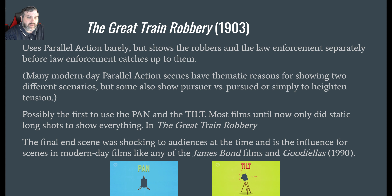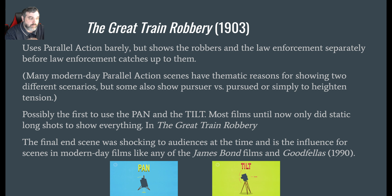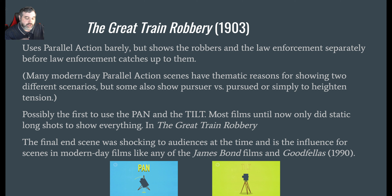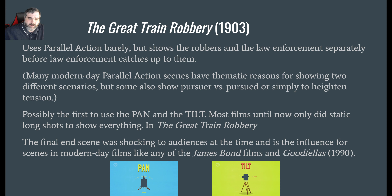There are two other big things about this film. First, it uses parallel action. Second, it's the first film to really use the pan and tilt of the camera. Up until this point, movies did static long shots. A long shot means you can see the entire body of the actor. Right now, this would probably be a medium shot — more like a close-up — if you're looking at just my video. A medium shot is waist up, or chest up, that type of thing.